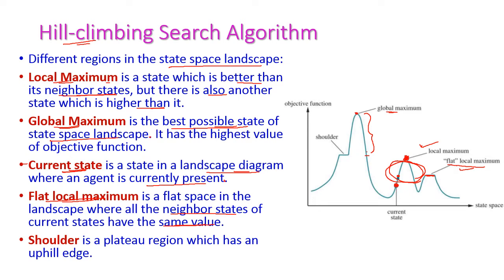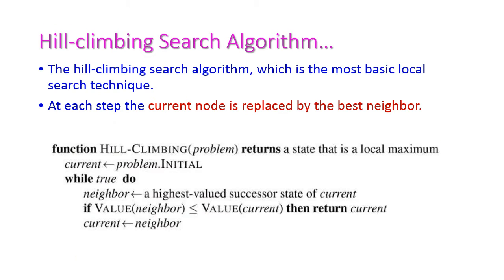The next one is shoulder, which is also a flat region but has an uphill edge. Here also, all the neighbors are having the same value. Now, the function hill climbing accepts the problem as input and returns a state that is the local maximum among all the search space. The current node is initialized to the initial state.